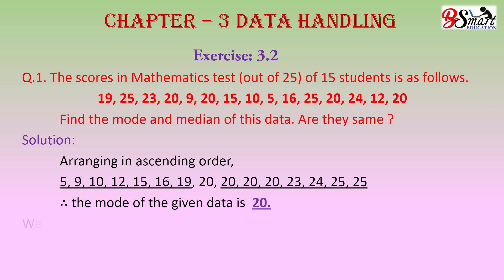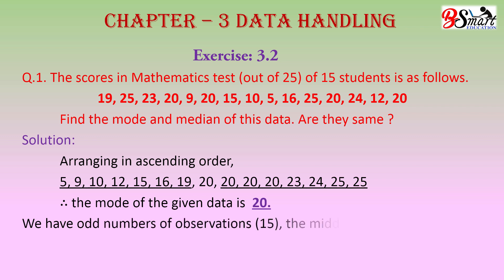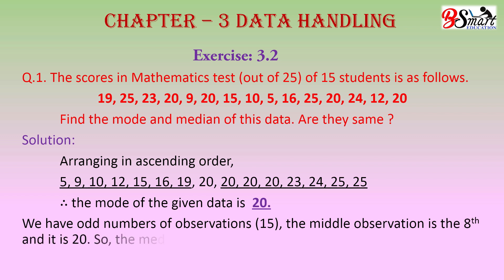We have an odd number of observations — 15 observations. The middle observation is the 8th, and it is 20. So, the median of the given data is also 20.